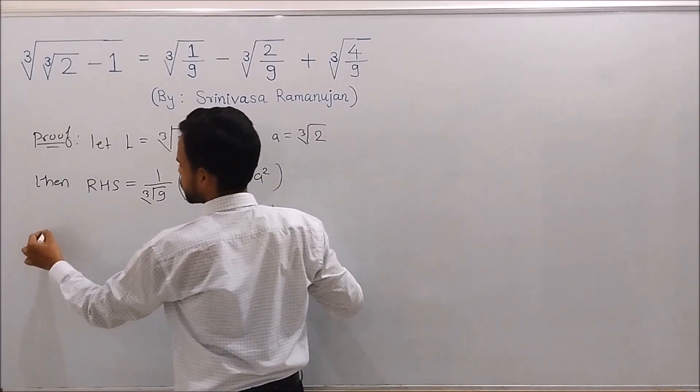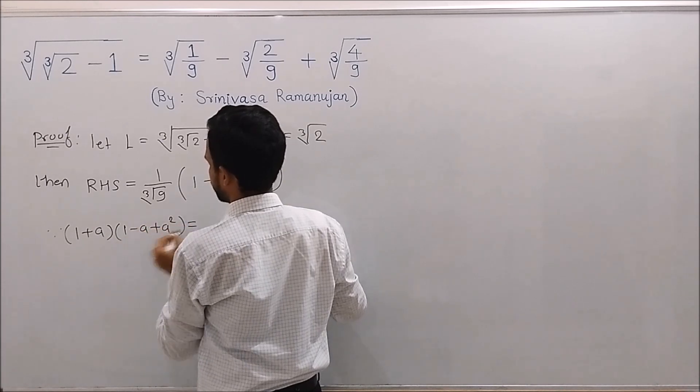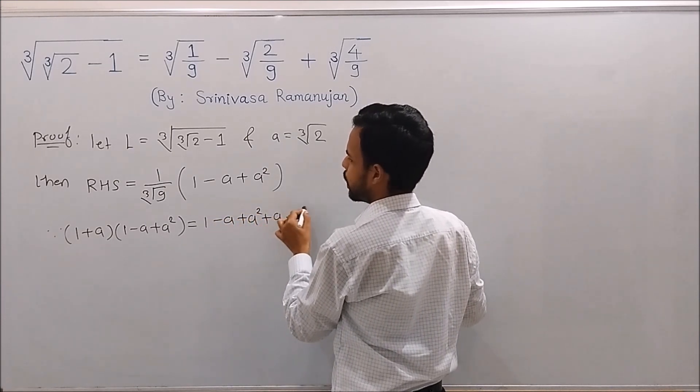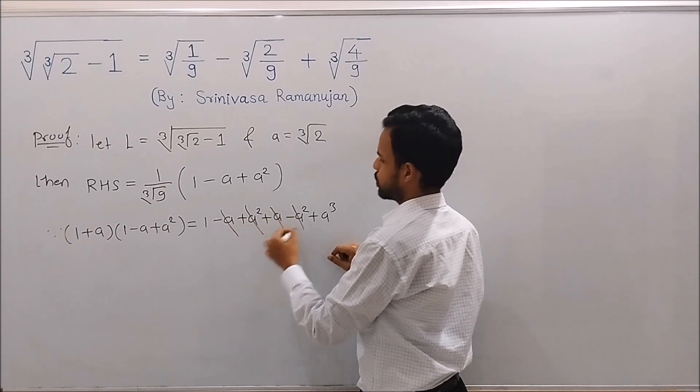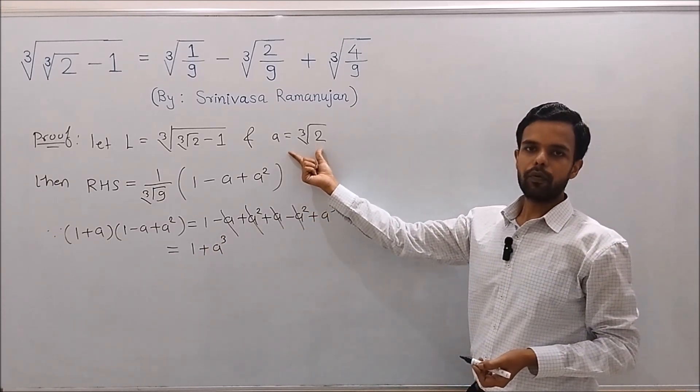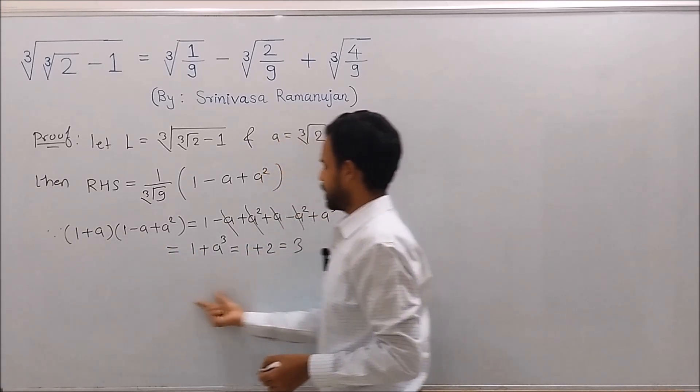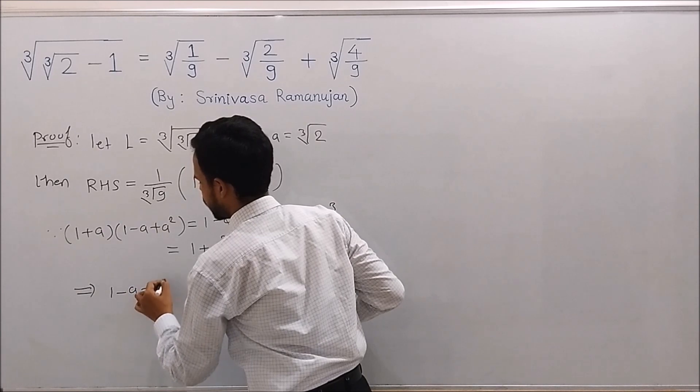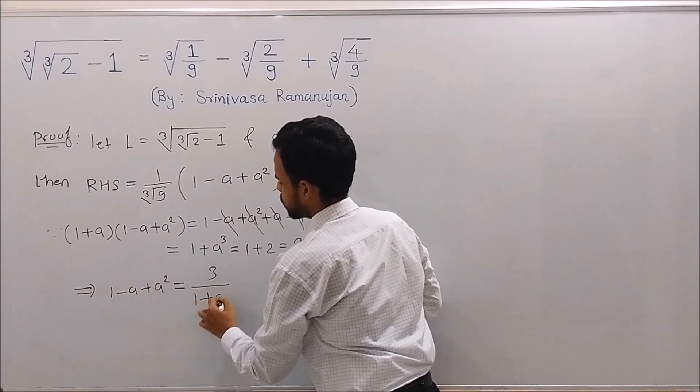And since (1 plus A) times (1 minus A plus A squared) equals 1 plus A cubed, after cancellation we get 1 plus A cubed equals 3, because A equals cube root of 2, so A cubed equals 2. Therefore, from here we have 1 minus A plus A squared equals 3 over (1 plus A).